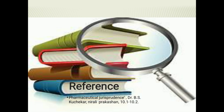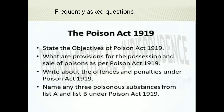Reference for this topic: Pharmaceutical Jurisprudence by Dr. P.H. Kuchekar. Frequently asked questions for the Poison Act: State the objective of the Poison Act. What are the provisions for the possession and sale of the poison? Write about the offenses and penalties under this Act. And name any three poisonous substances from List A and List B under this Act. Thank you.